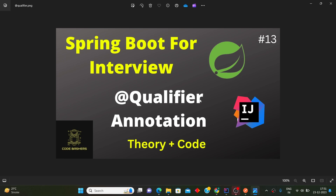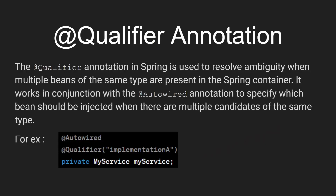So let's start this video. The @Qualifier annotation in Spring is used to resolve ambiguity when multiple beans of the same type are present in the Spring container. It works in conjunction with the @Autowired annotation to specify which bean should be injected when there are multiple candidates of the same type.